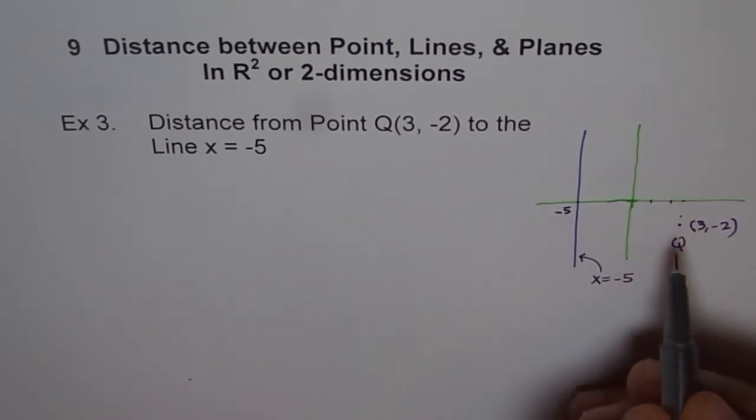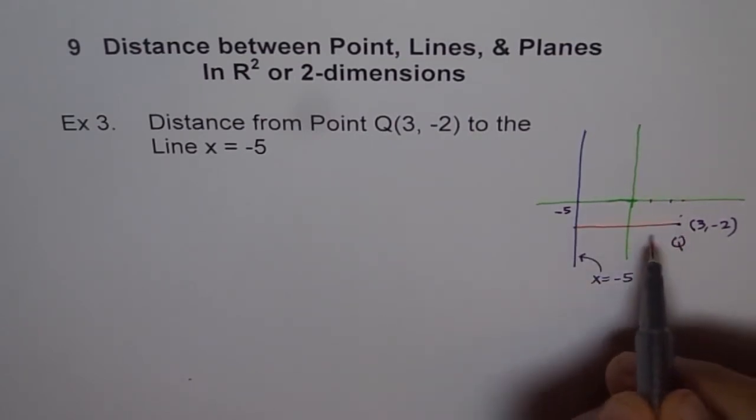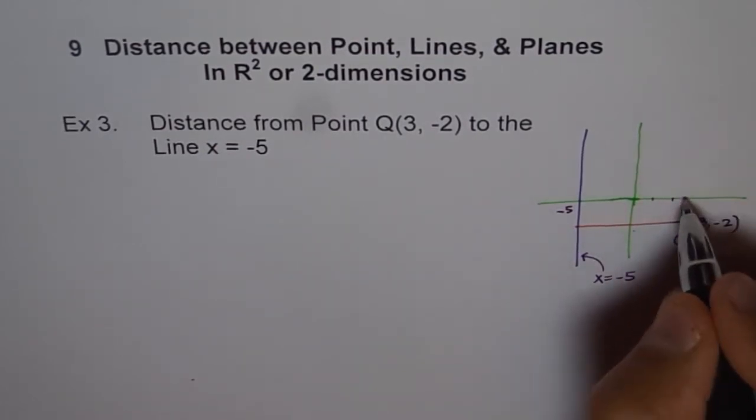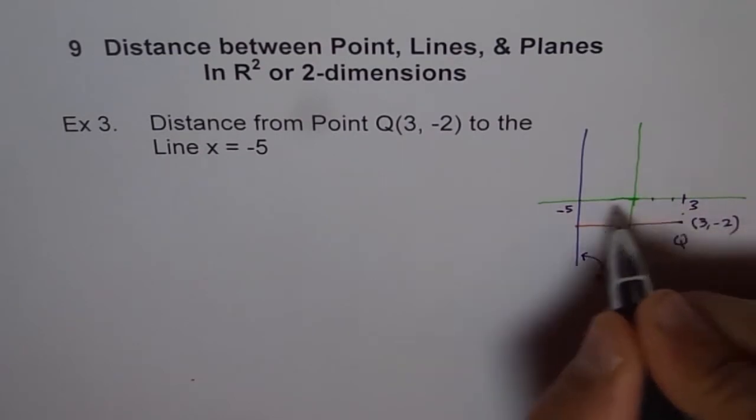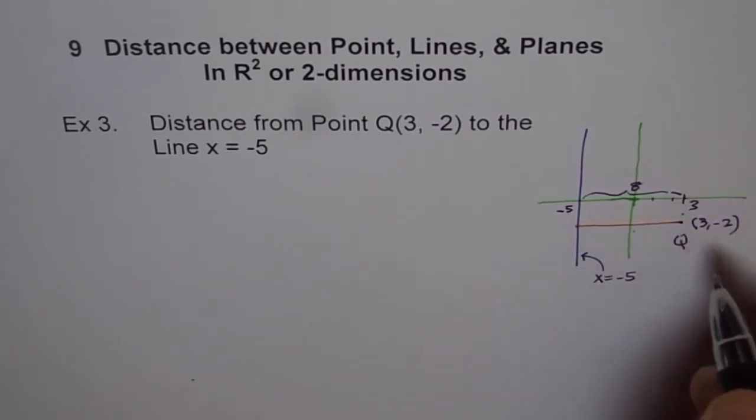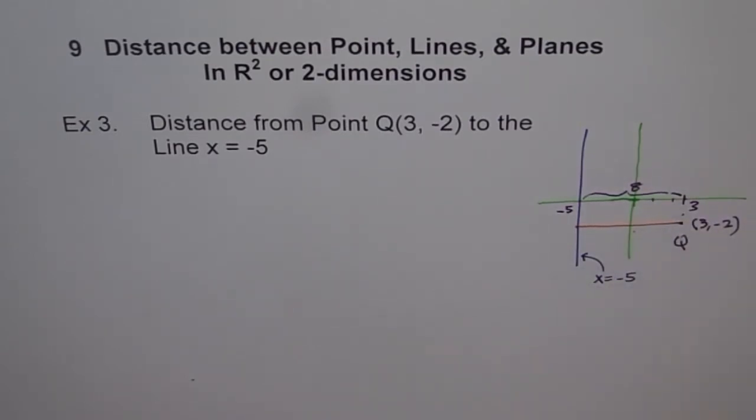So what is the distance between this point and this line? Well, very easy to see that part. Like this, we can go shortest distance, 5 units here and 3 units there. So the shortest distance is, because this is 3 and minus 5, so my distance is 8.